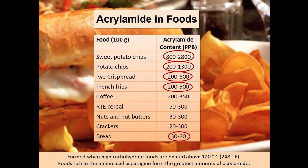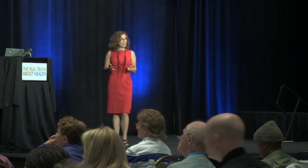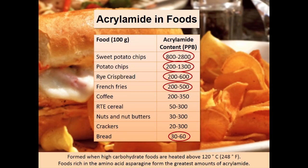Acrylamide is formed when high-carbohydrate foods are heated above about 248°F — which isn't a very high temperature, so they form very easily, even when baking potatoes, especially with dry heat. The highest amounts of acrylamide are found in potatoes because they are high in the amino acid asparagine, which is needed to produce acrylamide. Rye crispbreads and anything cooked for a long time at fairly high heat will also produce acrylamide.